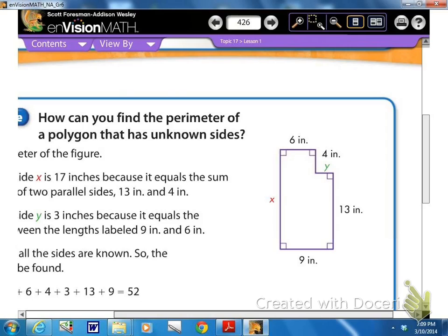Let's look at this. How can you find the perimeter of a polygon that has unknown sides? So, looking at this figure over here, in order to find the perimeter, we have to know all the lengths of each side. So on this side, we don't know what X is, but we know X is the distance from here to here.